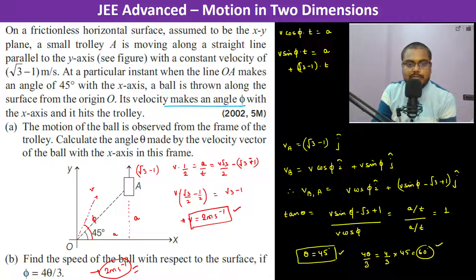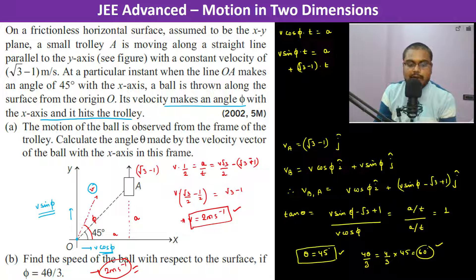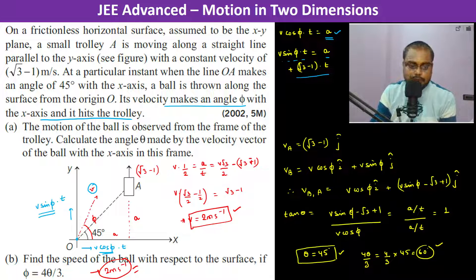To recapitulate: the ball's velocity makes angle φ with the x-axis. So the x-component is v·cosφ and the y-component is v·sinφ. In time t, it covers v·cosφ·t in the x-direction and v·sinφ·t in the y-direction. Since it hits the trolley at point A: v·cosφ·t = a, and v·sinφ·t = a + (√3 − 1)·t, because the trolley has already moved up by (√3 − 1)·t.